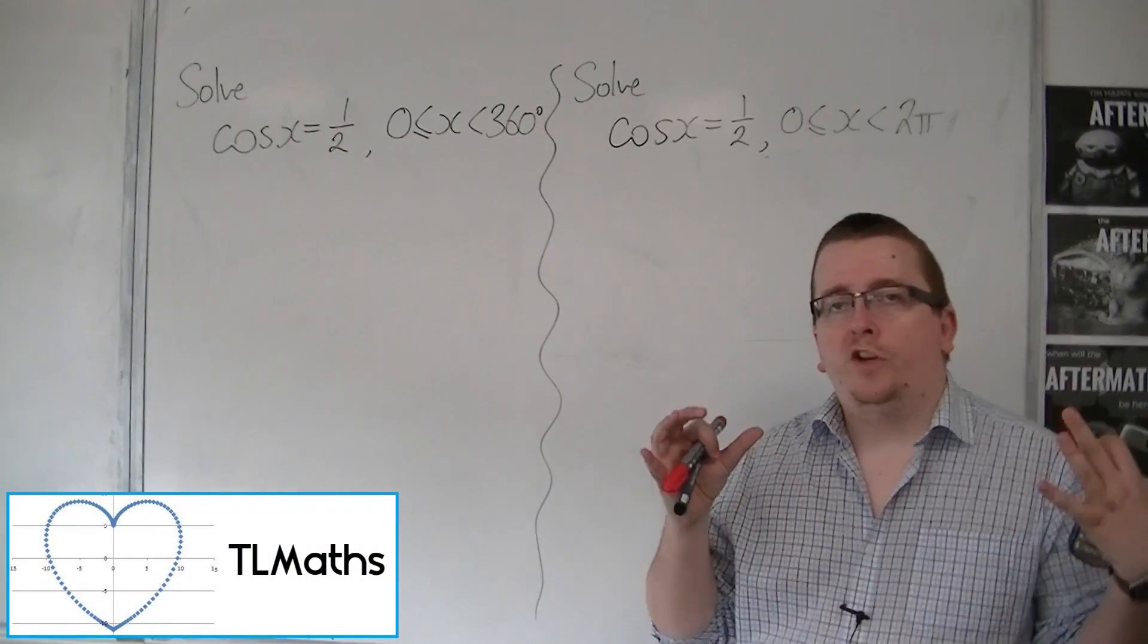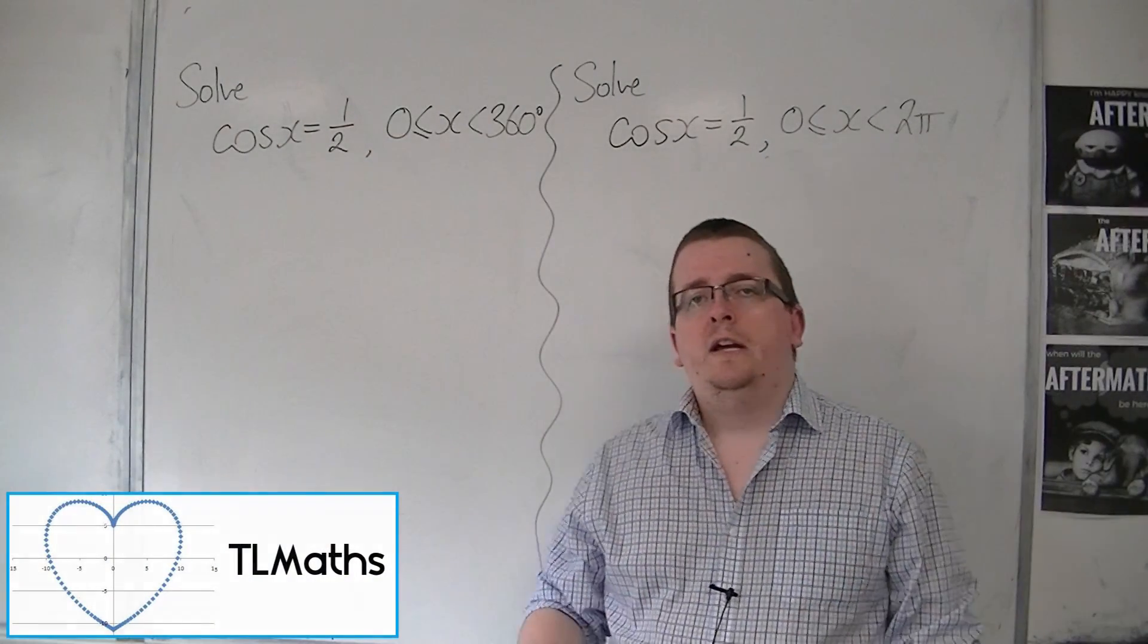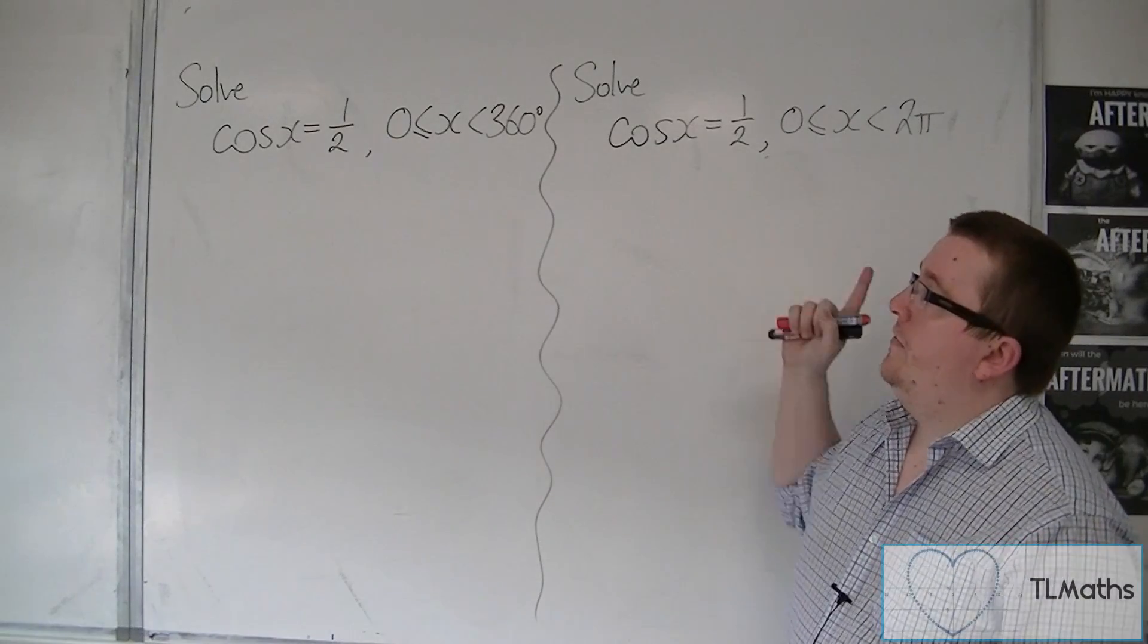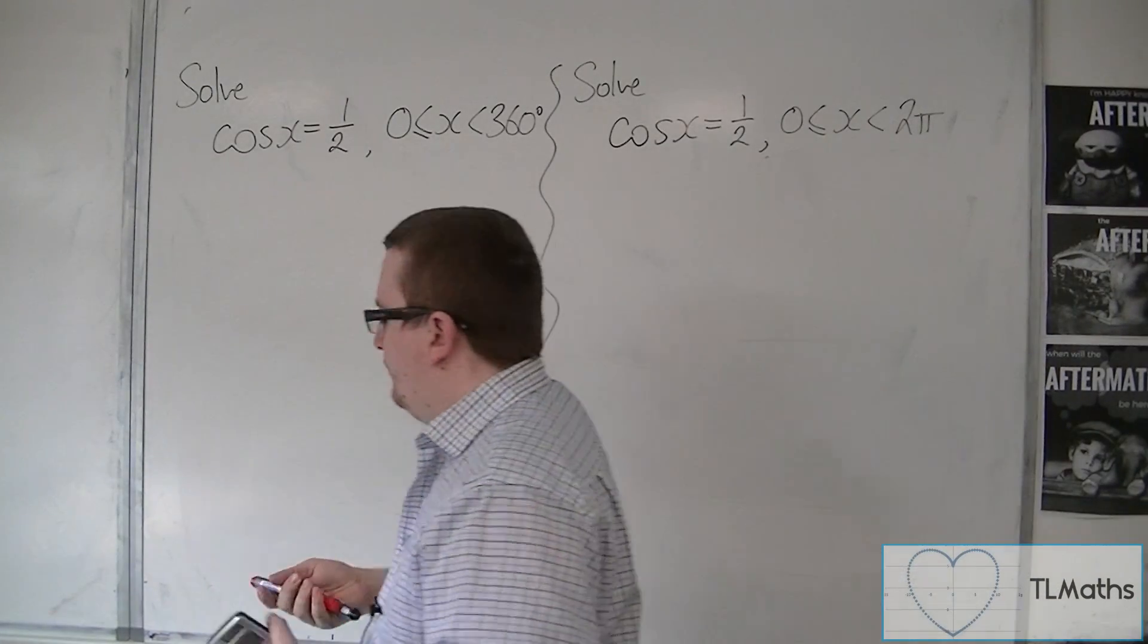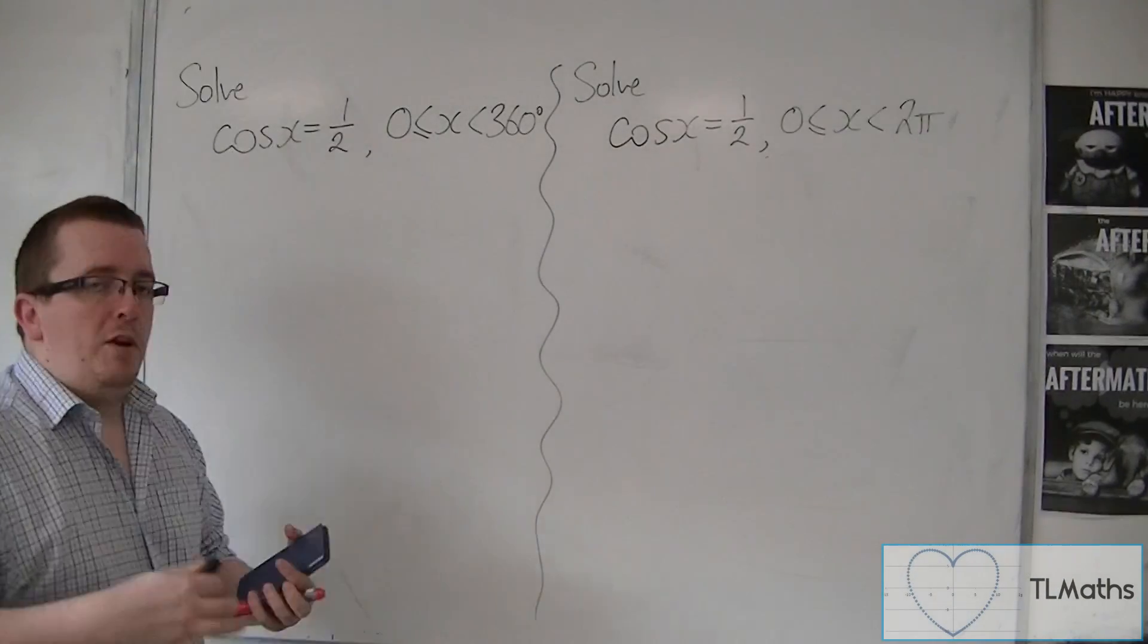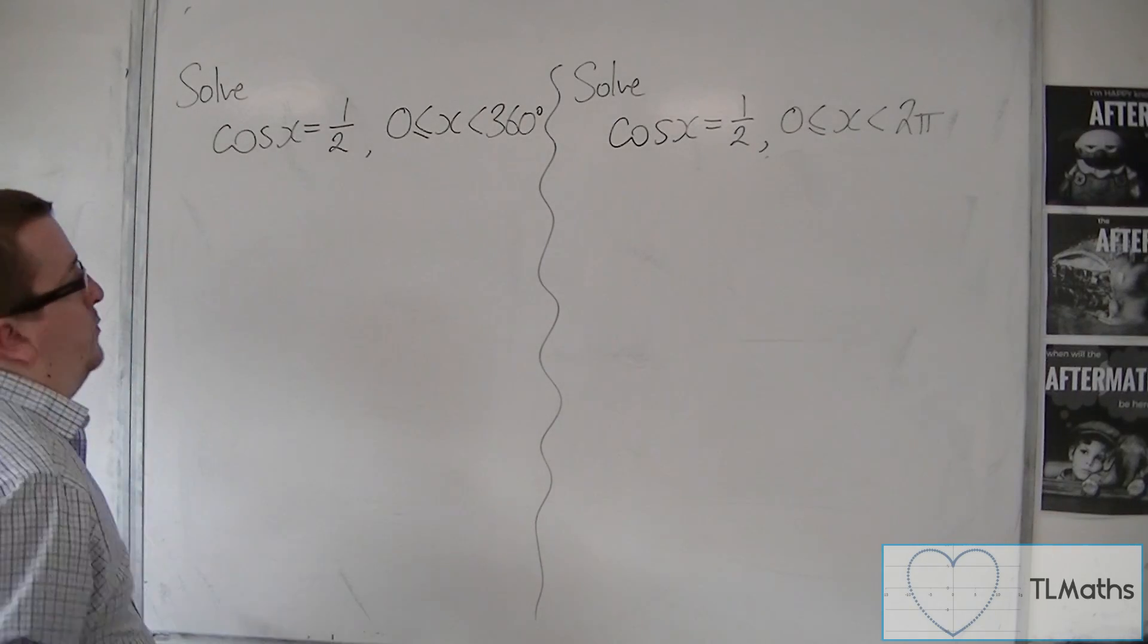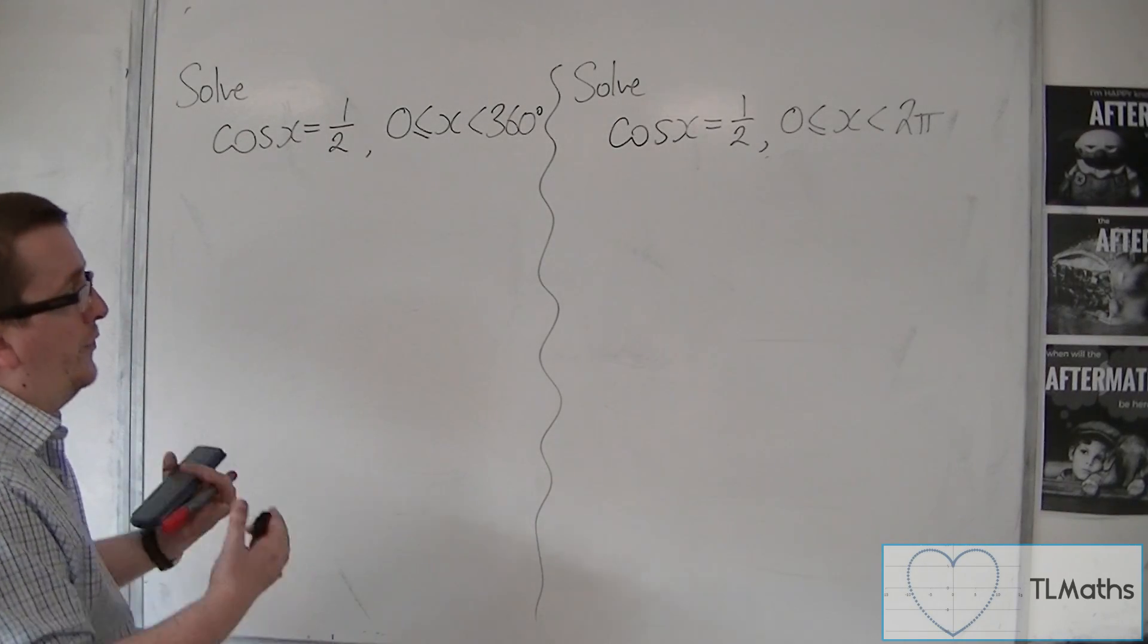In this video, I'm going to solve cos x equals 1 half in degrees and then radians. This works in much the same way as we did with the previous video, with sine x equals a half.